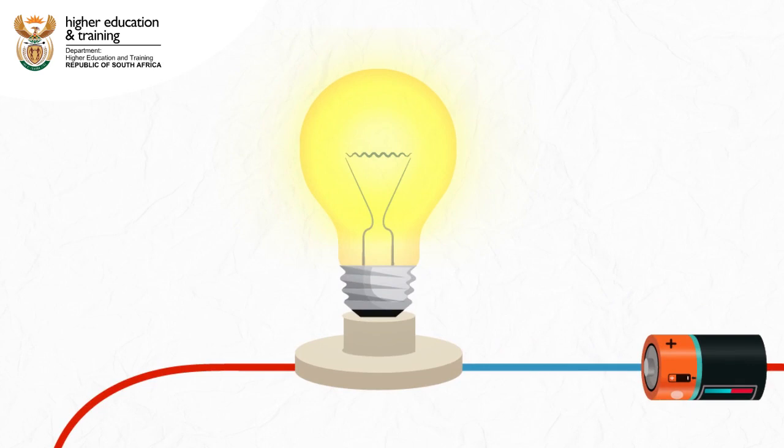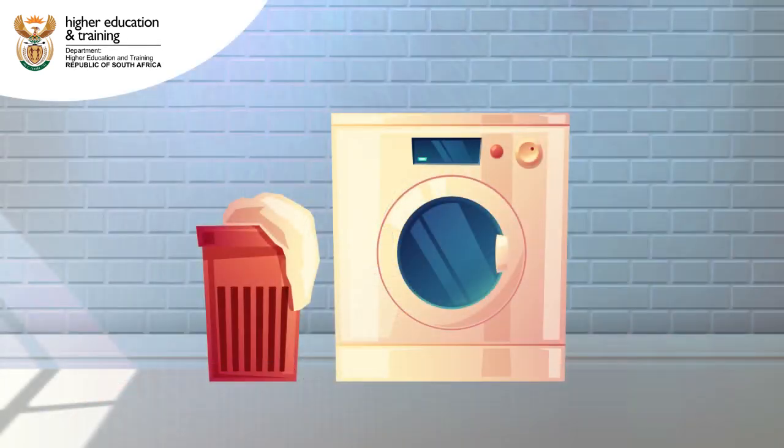In a circuit that only contains a light bulb, for example, all the work is usefully used to create light and heat. But a circuit with an electric motor is different.